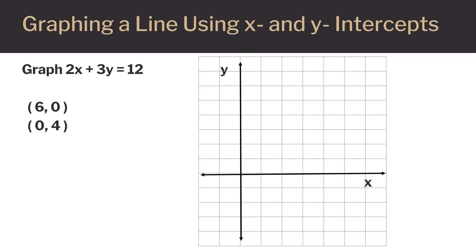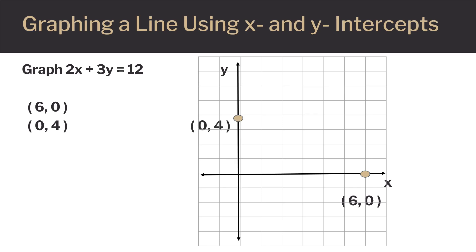We'll use the 2 intercepts to graph the line. Let's start by graphing the point (6, 0). This is our x-intercept, so it will be on the x-axis. Next, we plot the point (0, 4). This is our y-intercept, and it is on the y-axis. Now we've got 2 points and we can draw a line through them. Here is the graph of 2x plus 3y equals 12.